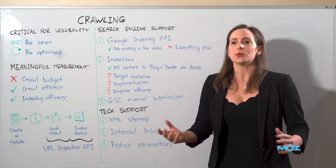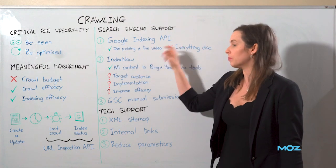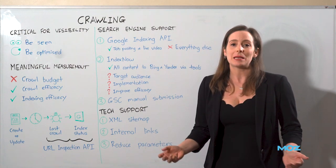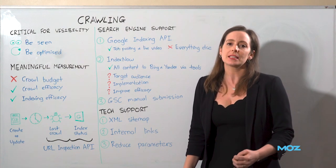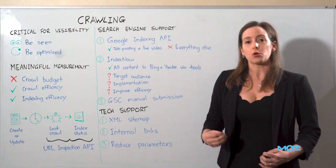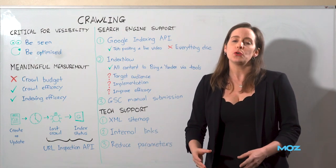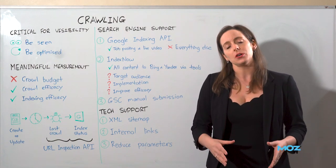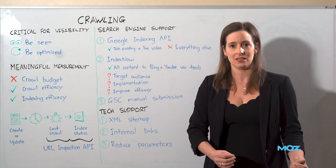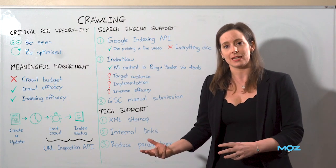Google has said multiple times that you can only use the Google Indexing API if you have job posting or broadcast event structured data on your website. Many people have tested this and proved that to be false — you can use the Google Indexing API to crawl any type of content. But this is where the idea of maximizing the amount of crawling proves problematic. Although you can get URLs crawled with the Google Indexing API, if they do not have that structured data on the pages, it has no impact on indexing. All of that crawling weight on the server and the time invested to integrate with the API is wasted.